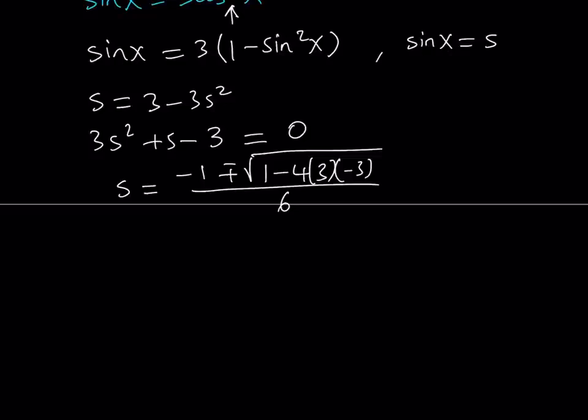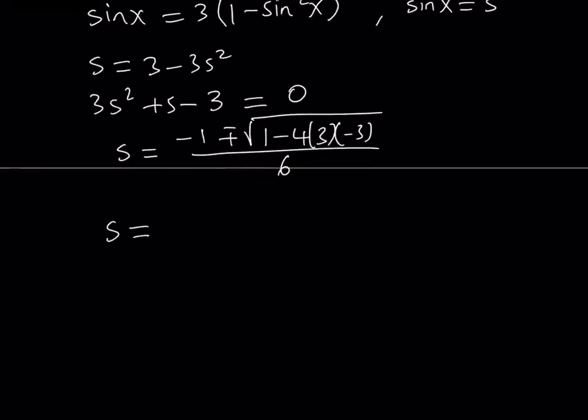If you simplify this, we're going to be getting sine x from here. So s equals negative 1 plus minus, inside the radical, we have 4 times 3 times 3, which happens to be positive. And that is going to be 9 times 4, which is 36. And you add the 1, you get 37 inside the radical. So we get square root of 37. One thing to remember here is that the square root of 37 is greater than the square root of 36, which is equal to 6.